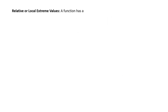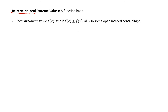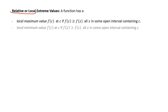We now consider local or relative extreme values. We say a function has a local maximum value f(c) at c if f(c) is greater than or equal to f(x) for all x in some open interval containing c. It has a local minimum value f(c) at c if f(x) is greater than or equal to f(c) for all x in some open interval containing c.